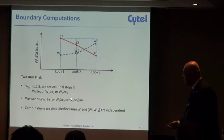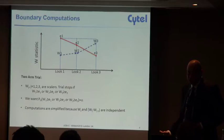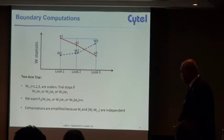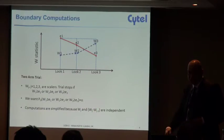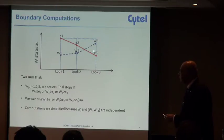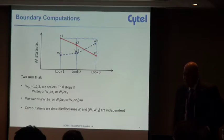The probability of crossing at the first look, or continuing and stopping at the second look, or continuing through the first two looks and stopping at the third, that should be alpha. These computations for getting E1, E2, E3 are greatly simplified because of an important property of independent increments, which is that WJ minus 1 and WJ minus WJ minus 1 are independent.